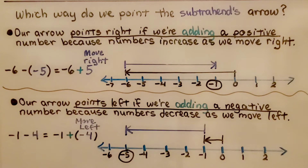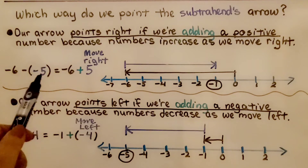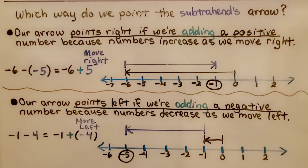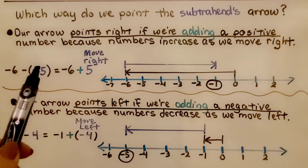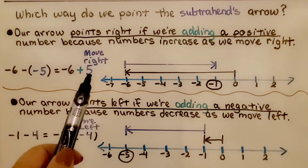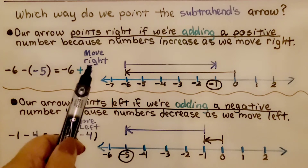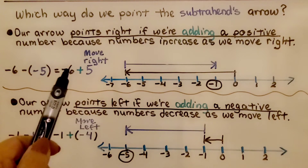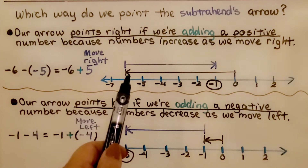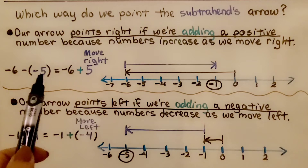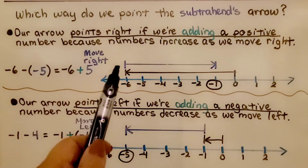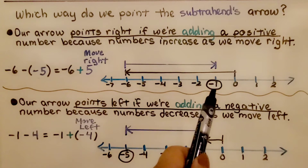When drawing number lines, which way do we point the subtrahend's arrow? Remember, the subtrahend is the number we're taking away. We have the minuend, the subtrahend, and the answer is the difference. Our arrow points to the right if we're adding a positive number, because numbers increase as we move right. Negative 6 minus negative 5 is rewritten as negative 6 plus positive 5, so we move right with the subtrahend. We start with negative 6 going from 0, and the subtrahend is now added as a positive 5, going 5 units in the positive direction, bringing us to negative 1.